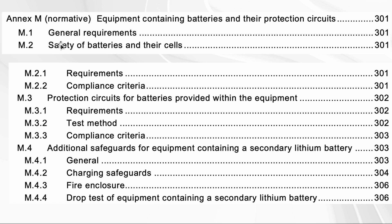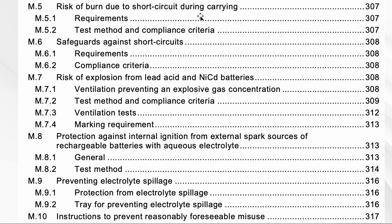Annex M includes M1 for general requirements and M2 for the safety of batteries and their cells, then it goes into various topics: protection circuits, additional safeguards when there is a lithium battery — including the fire enclosure with non-combustible material — burn risk due to short circuit during carrying, safeguards against short circuits, risk of explosion from lead-acid and NiCd batteries, and internal ignition from external spark sources for rechargeable batteries with alcohol electrolyte.